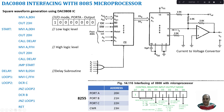Mode 0 is simple IO mode, mode 1 is IO mode with handshake signals, and mode 2 is bidirectional IO mode. Bit D4 represents the input or output function of port A: 1 means input, 0 means output. D3 is the IO function for port C upper (PC4 to PC7), again 1 for input and 0 for output. D2 is the mode selection for port B: 0 for mode 0, 1 for mode 1. D1 represents input or output for port B, and D0 is the port C lower IO function, where 1 means input and 0 means output.